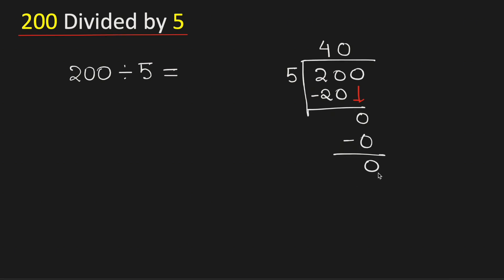As we have obtained the number 0 and we have no number to bring down here, so we will stop. Therefore, 200 divided by 5 is equal to 40. And this is our final answer.